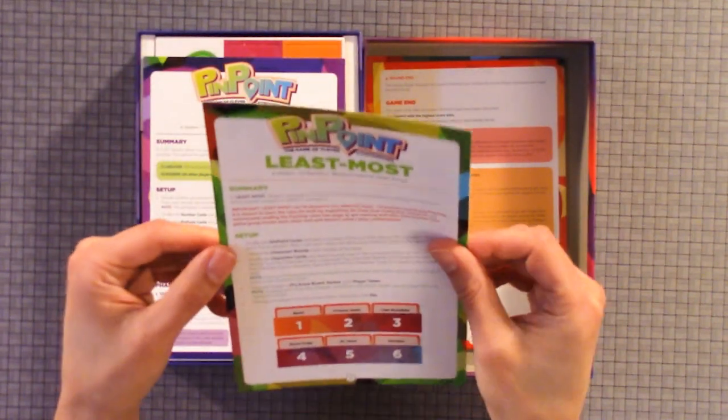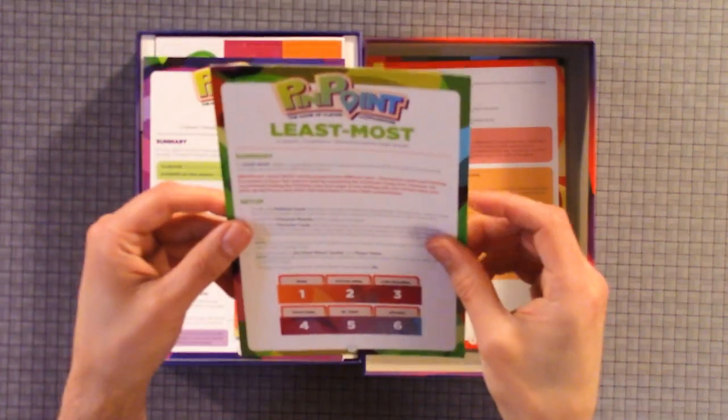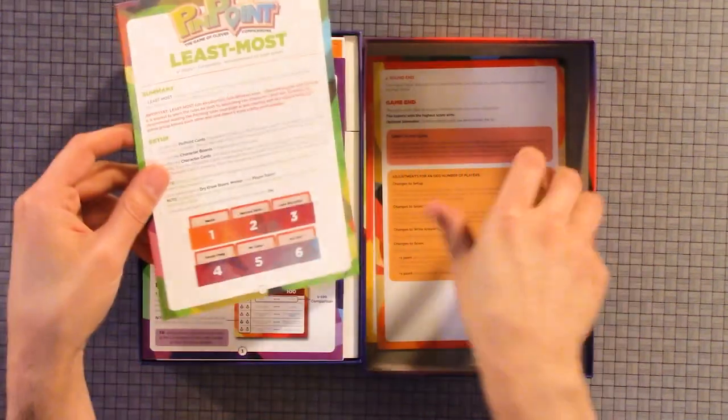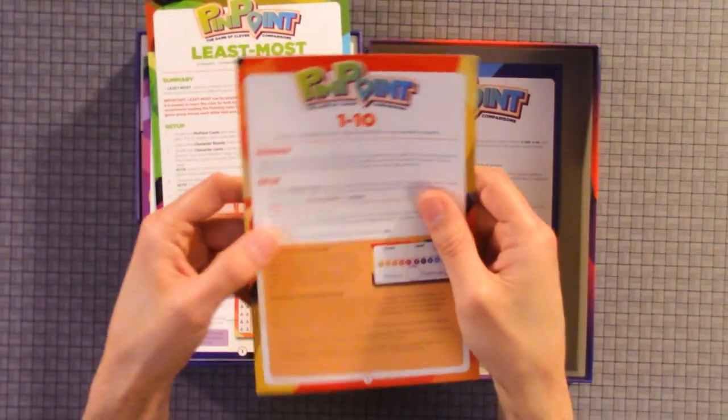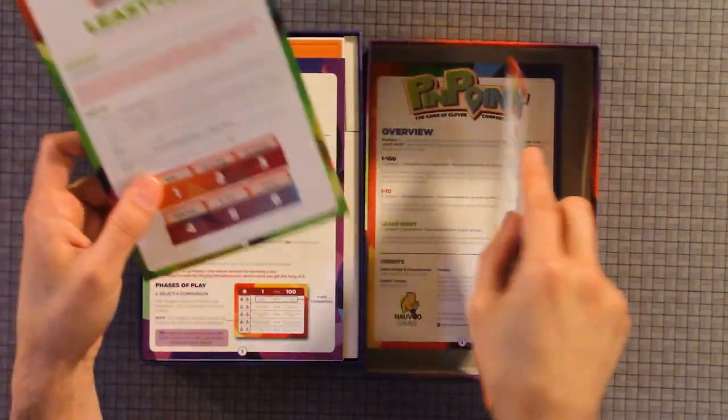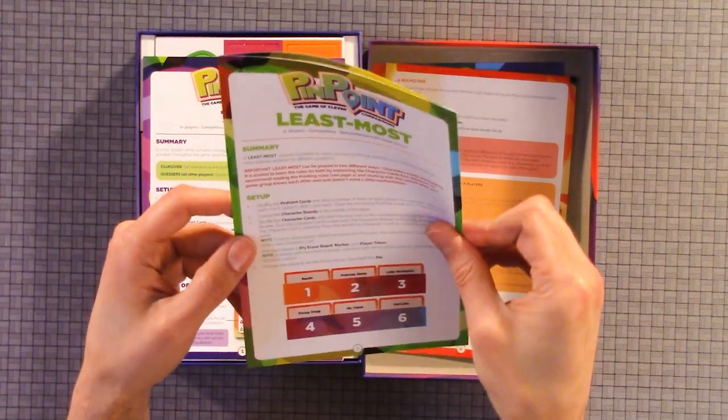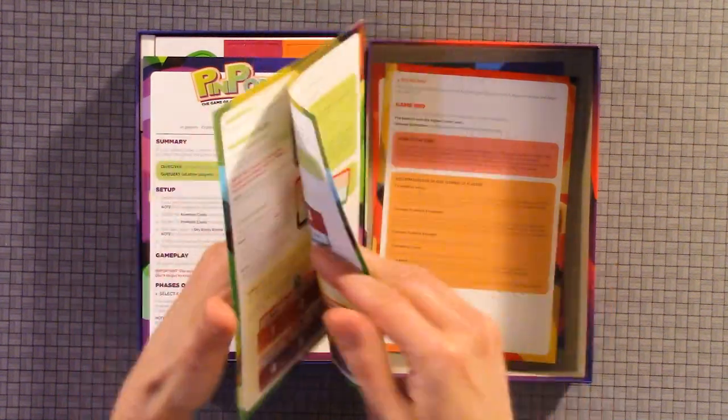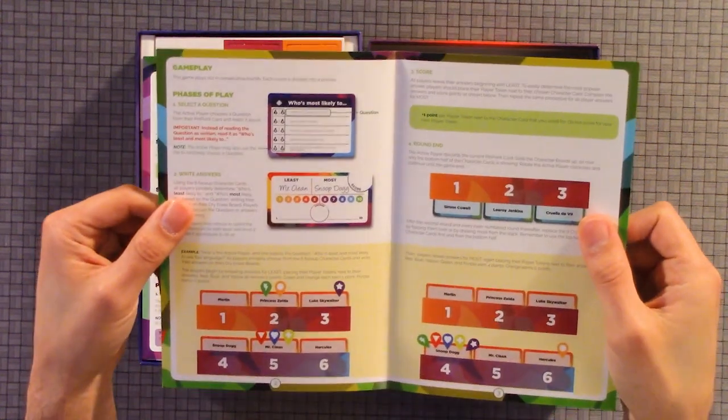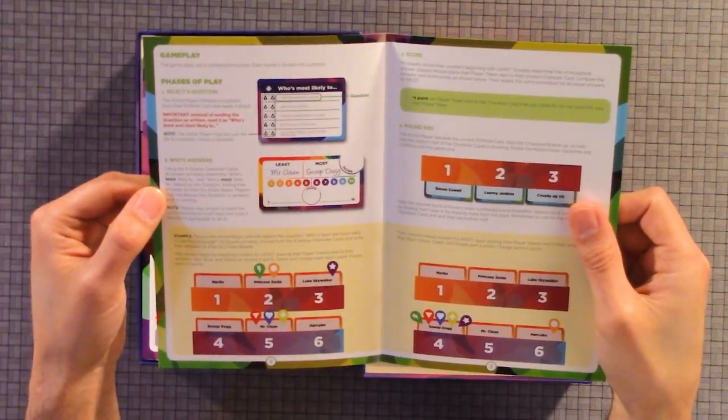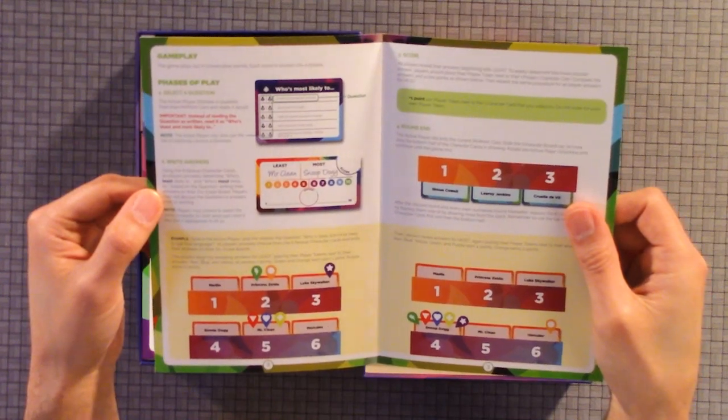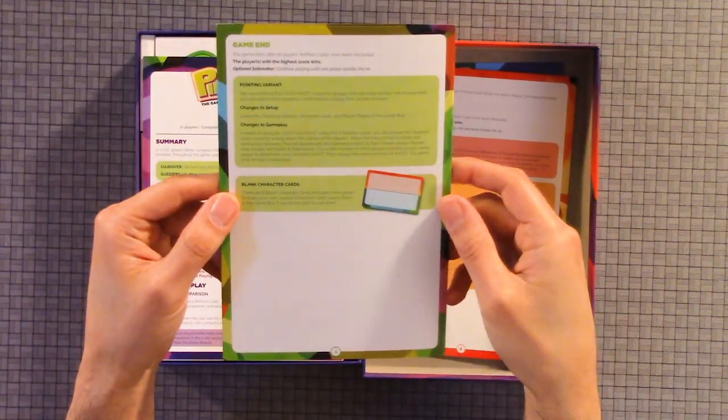Okay, so each game has their own rules. So here we have the least most, that was for the one to ten. The least most, we have summary setup, gameplay, basis of play. So we have selected question, right answer, score, game end.